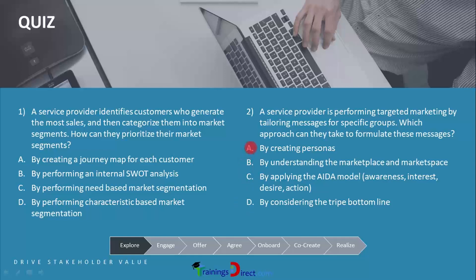Personas are required before the market can even be segmented or understood, so that happens too early — before the tailoring of messages for specific groups, so it cannot be the answer. Understanding the marketplace and market space also happens much earlier. Only later are messages tailored for specific market groups. Therefore the answer could be C or D.